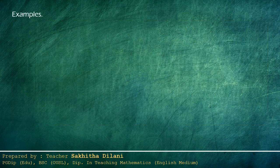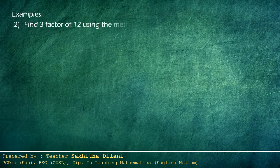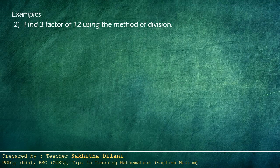Let's see another example. Find three factors of twelve using the method of division. Here, you are asked to write only three factors. Let's divide twelve by two. It gives six and there is no remainder. So two is a factor of twelve.